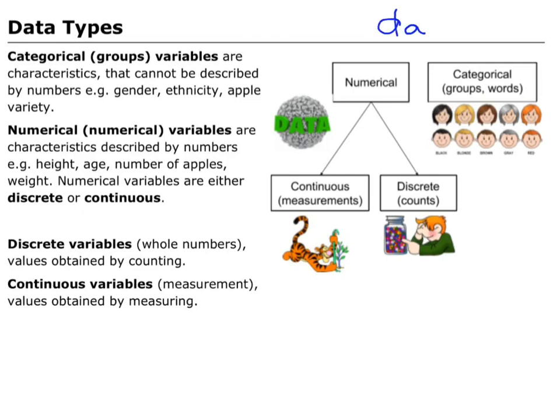When I collect data, it can either be some kind of numerical data — numerical meaning numbers — or it could be some kind of categorical data. Categories are any data that is in a group or word data. For example, your ethnicity and your gender are categories, whereas numerical data are things like your height and your weight.